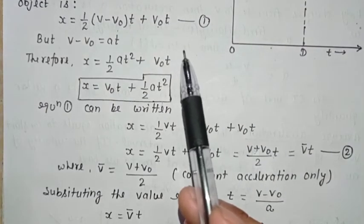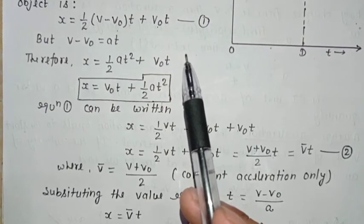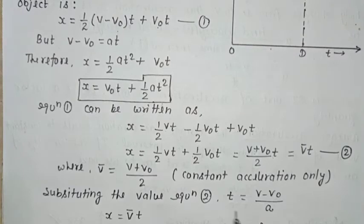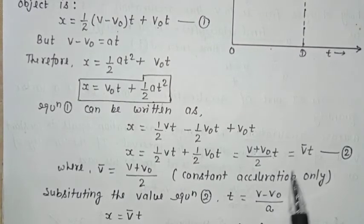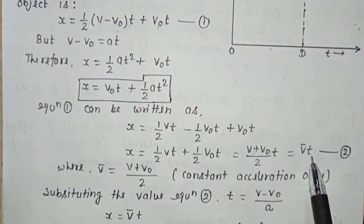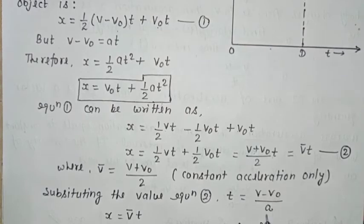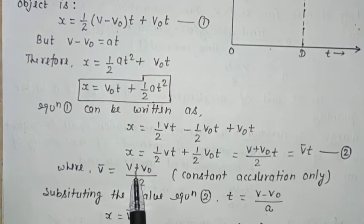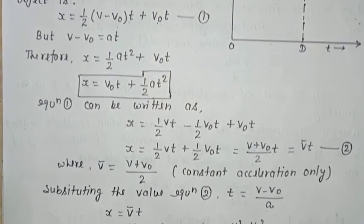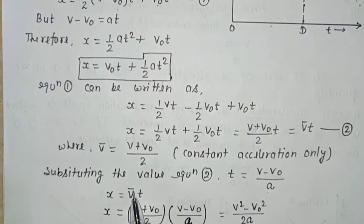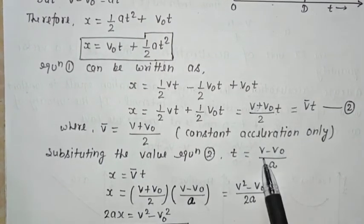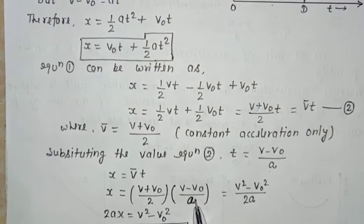Now from equation 1: V = V₀ + at, we find the value of t. Substituting value into equation 2: T = (V − V₀)/a. And V̄ = (V + V₀)/2. We will put both values here.